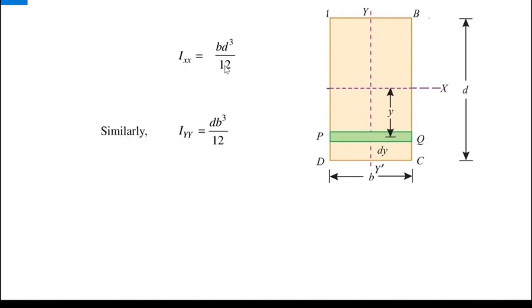So Ixx = bd³/12. Similarly, with respect to the Y-axis, we get Iyy = db³/12. Here is a simple trick to avoid confusion: for Ixx, start with the side parallel to the X-axis, which is b, then cube the other dimension: bd³/12. For Iyy, take the side parallel to the Y-axis, which is d, giving db³/12.